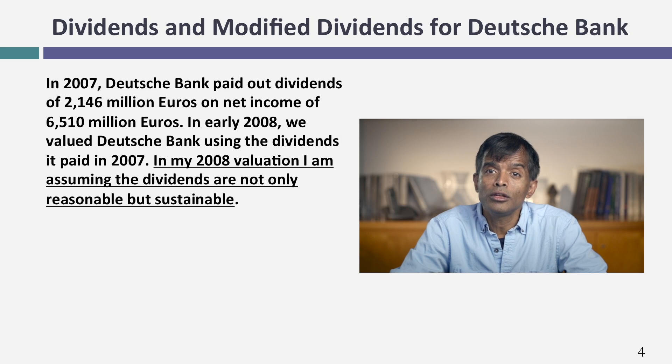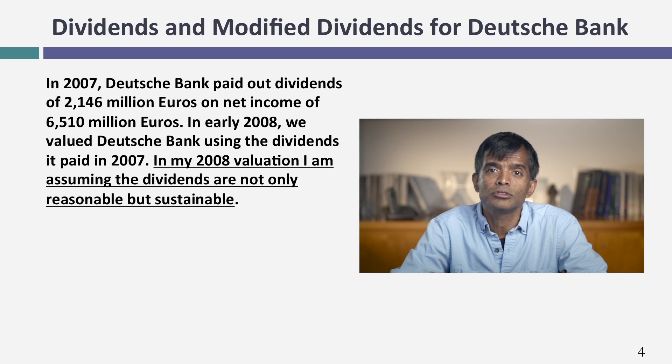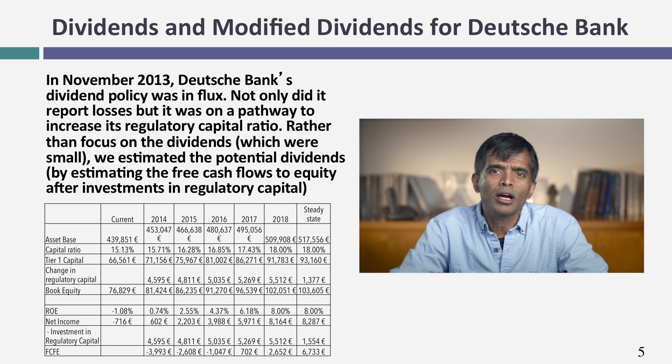Let's take a few examples. I'm going to start with Deutsche Bank and do two separate valuations: one in the pre-crisis period in early 2008, and one in 2013. Before the banking crisis of 2008, I assumed that banks were run by sensible people and that dividends they paid actually reflected what they could afford to pay. That is why in early 2008, when I valued Deutsche, I used the actual dividends paid — 2,146 million euros in 2007 — as my base case. In 2013, Deutsche was in trouble, losing money, and its dividend policy was in tremendous flux, changing constantly.